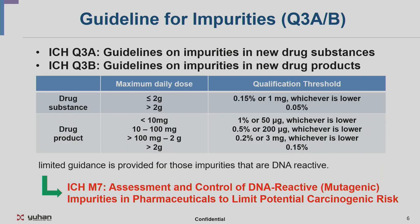Characterization and control of impurities were defined in Q3A and Q3B — Q3A for drug substance and Q3B for drug product. NMDDs are also set for DS and DP as shown in the table. However, for genotoxic impurities there were not many descriptions, so EMA and FDA produced relevant guidelines and discussed the need for control of genotoxic impurities. This led to approval for the development of ICH M7, which is about assessment and control of DNA reactive impurities in pharmaceuticals to limit potential carcinogenic risk.